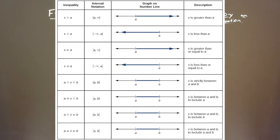Similarly, A is less than X, which is less than or equal to B — parentheses around A and bracket for B, so X is between A and B but includes B. And lastly, A is less than or equal to X, which is less than or equal to B. We have brackets on both A and B, meaning X is between A and B and includes both A and B.